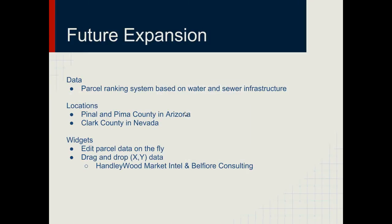For future expansion, we'd really like to have a parcel ranking system based on water and sewer infrastructure. That's turning out to be quite a task because nowadays they won't give you that GIS data — they think you're going to blow up the water and sewer lines. They'll give you as-builds as picture maps, but not usable GIS data, which makes it impossible to do anything with. For locations, we're definitely adding Pinal County and Pima County in Arizona, and Clark County in Nevada to get the Vegas market. Some California data may go in the future, but it's more expensive and harder to combine.